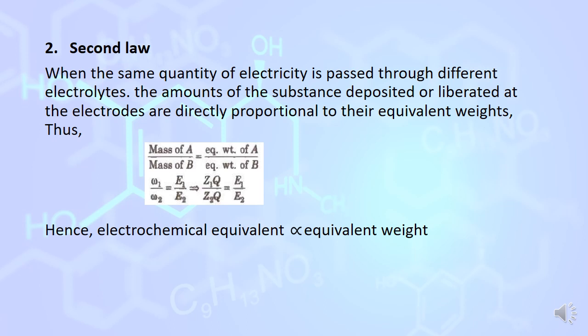Second law of Faraday: When the same quantity of electricity is passed through different electrolytes, the amount of the substance deposited or liberated at the electrode is directly proportional to their equivalent weight. Mass of A divided by mass of B equals equivalent weight of A divided by equivalent weight of B. Or we can say electrochemical equivalent is directly proportional to equivalent weight.